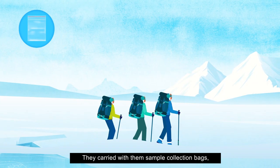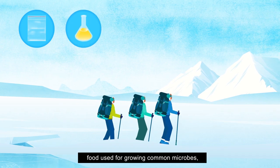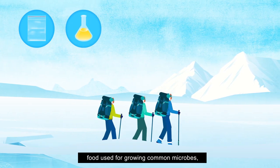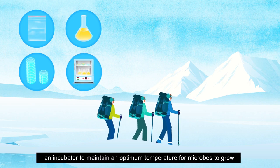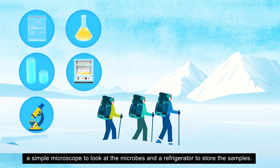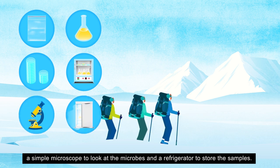They carried with them sample collection packs, food used for growing common microbes, sterile dishes to grow these on, an incubator to maintain an optimum temperature for microbes to grow, a simple microscope to look at the microbes and a refrigerator to store the samples.